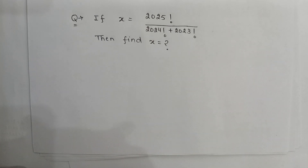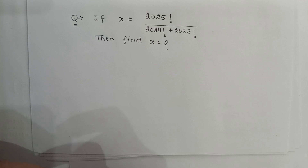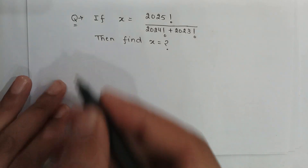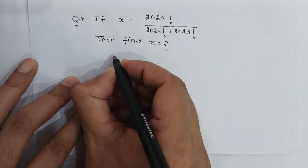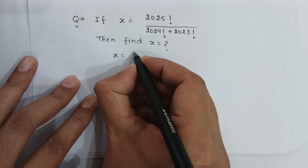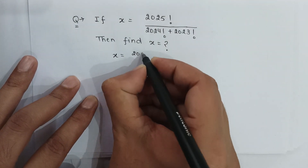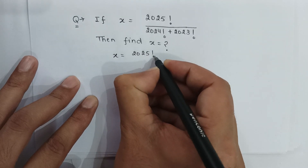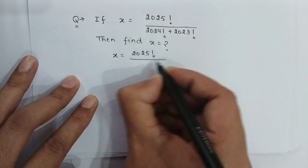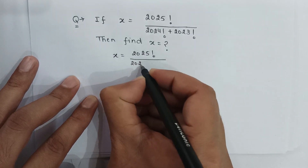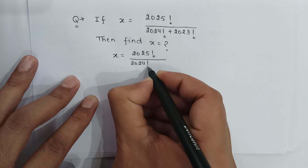Here is a very nice factorial problem. If x is equal to 2025 factorial, whole over 2024 factorial plus 2023 factorial, then find the value of x. So here x is equal to 2025 factorial, whole over 2024 factorial plus 2023 factorial.